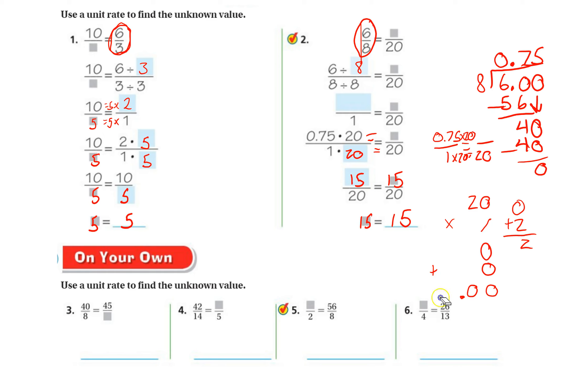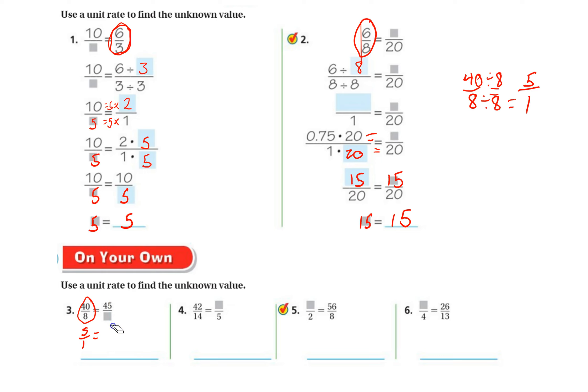I'm going to erase my work. You don't need to. I have a limited amount of space. You can get as much scratch paper as you need. Here, this is the side that I have both the numerator and the denominator for. So I'm going to change that to a unit rate. 40 over 8. I got to divide by 8. That's going to give me my 1. And then 8 goes into 40 five times. So my unit rate is 5 to 1. So now I can figure out 45 over what? So to get from 5 to 45, I have to multiply by 9. Multiply the bottom by 9. So my missing number is 9.